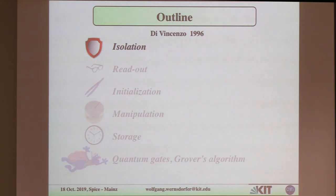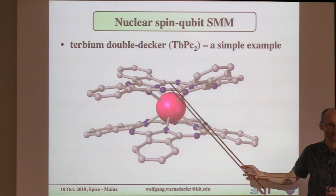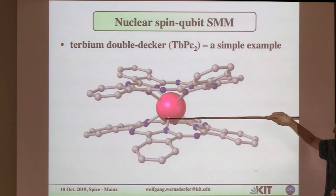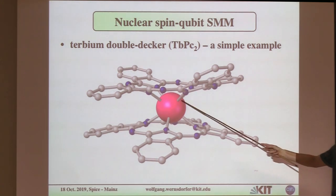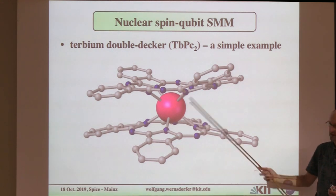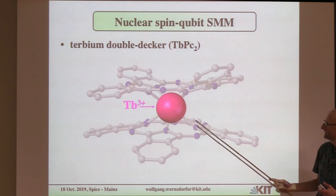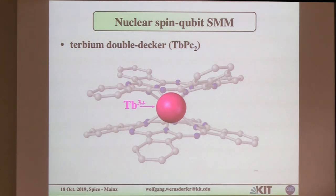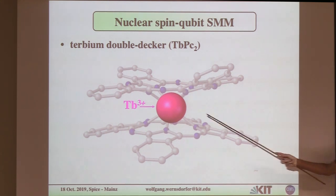In this first step, I want to present the key player of this talk: the phthalocyanine molecule. Physicists call this a double-decker — we have two ligands and an ion kept in the middle. This ion can be many different things; most of the time there are rare earth ions inside. In this talk, we focus down to just one ion: a terbium-3-plus ion. This very stable ion is well known in physics, and we try to play with this guy.